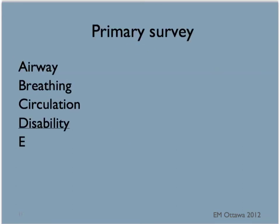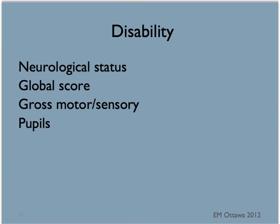Once circulation is addressed, we will continue with the disability assessment. Disability assessment is a quick check of the neurological status. We do a global score, a gross motor and sensory exam, and a pupil exam.